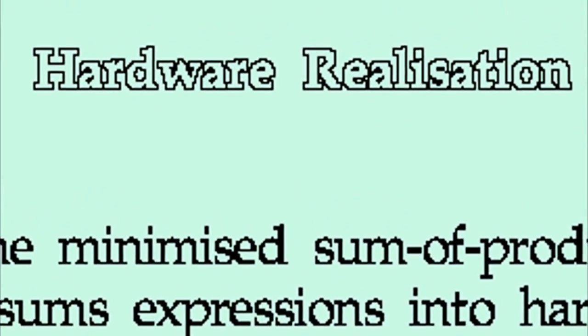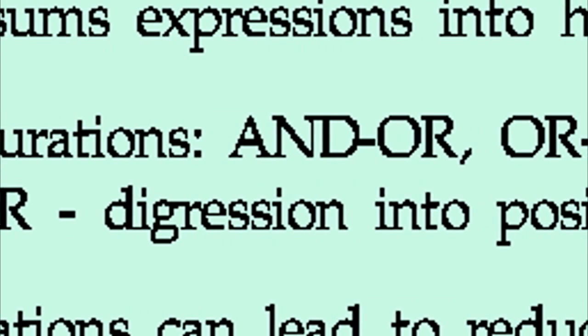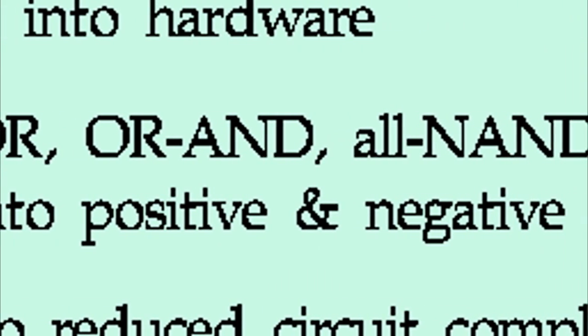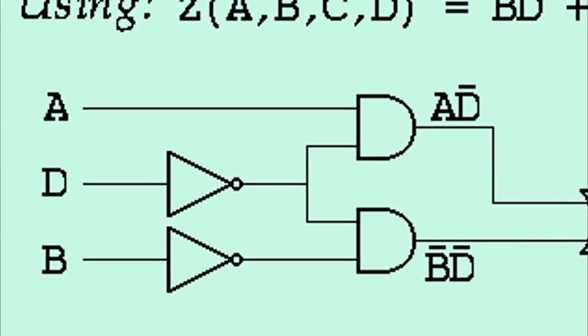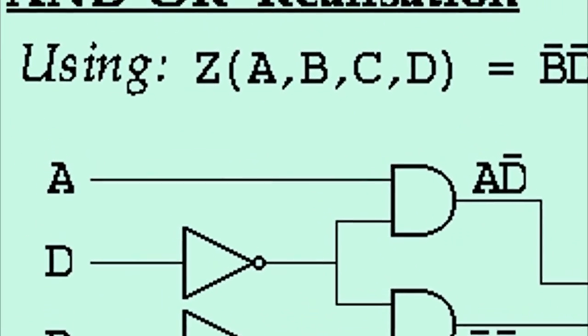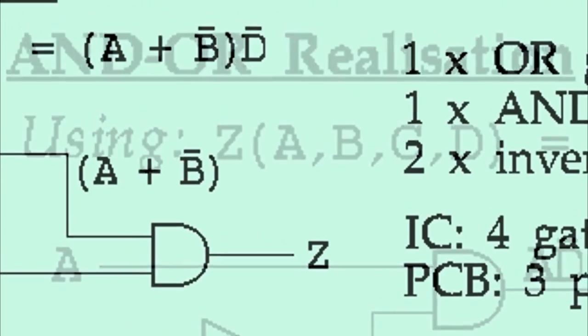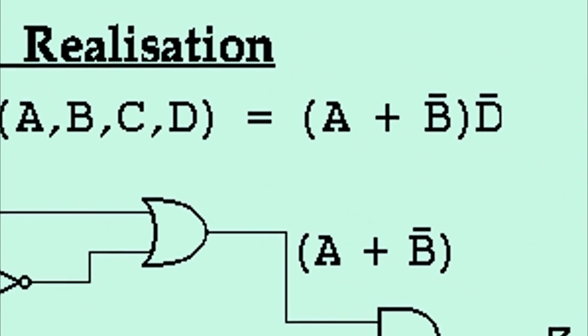Having minimized our boolean functions and obtained expressions in sum of products and product of sums forms, we are now ready to realize those expressions in hardware. There are four general configurations that can be obtained from the two minimized expressions. They are the AND-OR configuration, the OR-AND configuration.